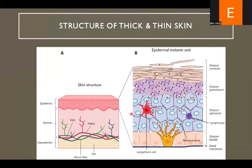For skin to be classified as thick or thin, it depends on the number of layers in the epidermis. Thick skin is the kind you see in your palm and the sole of your feet. You can look at your palm and realize it has a thicker layer than the back of your hand. The back of your hand will have thin skin, while the palm is thick. The rest of the skin on your upper limbs, lower limbs, and back are all thin skin.